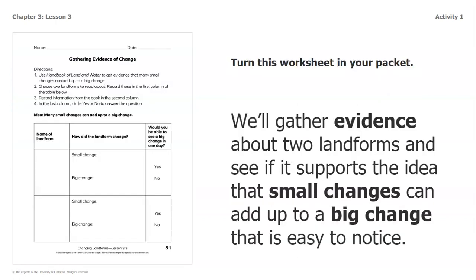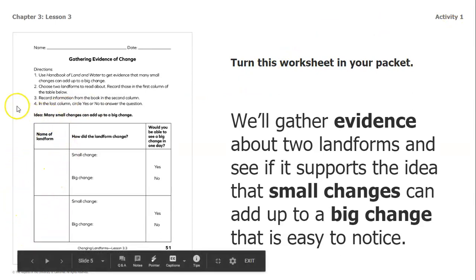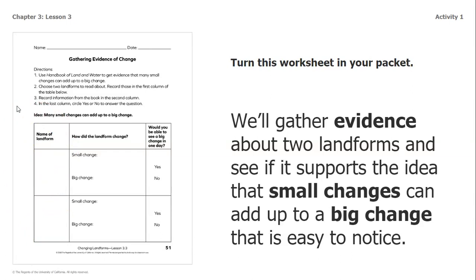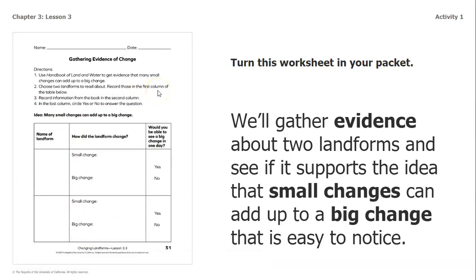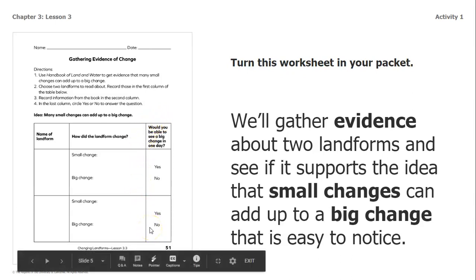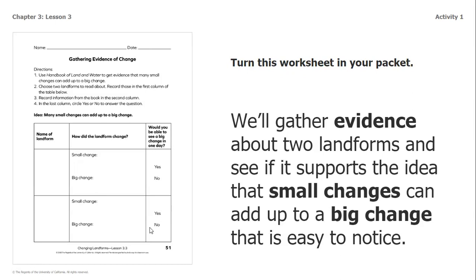In your packets, you have a worksheet called 'Gathering Evidence of Change.' We're going to use the handbook of land and water to get evidence that many small changes can add up to a big change. We'll choose two landforms from the book to read about and record them in the first column of the table where it says 'name of landform.' Then we'll record information in the second column — small changes and big changes with that landform. In the last column, you're going to circle yes or no to answer the question: would you be able to see a big change in one day?